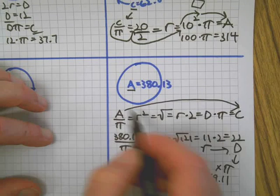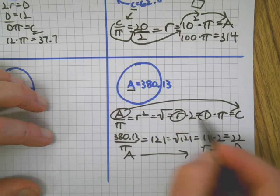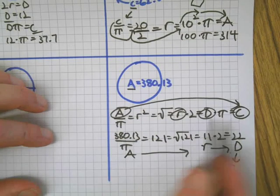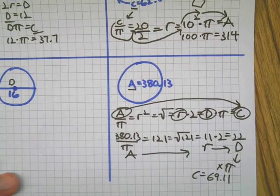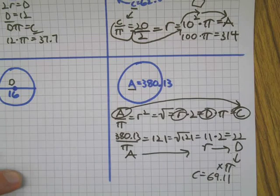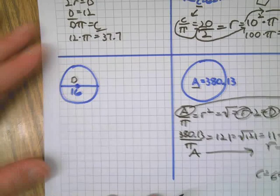So we traveled all the way from area to circumference: area, radius, diameter, circumference. Hope you're following that chain. If that's moving too fast, go back to the organizer and check out the organizer.